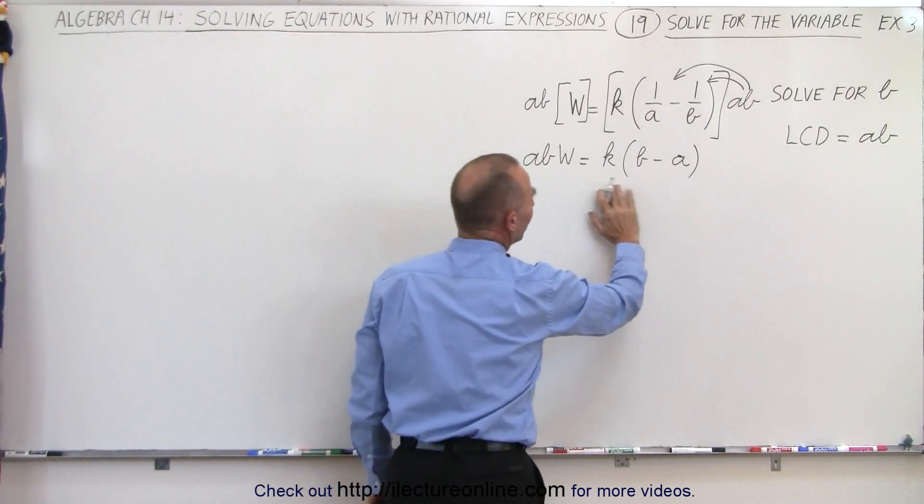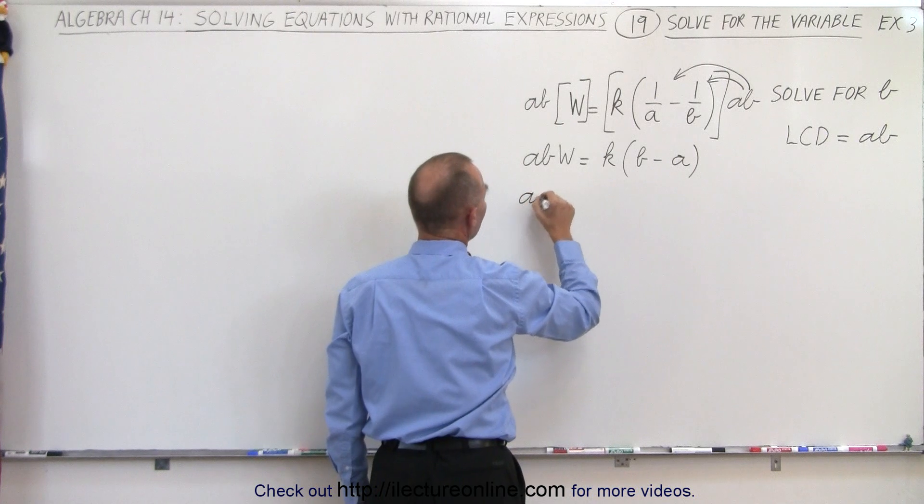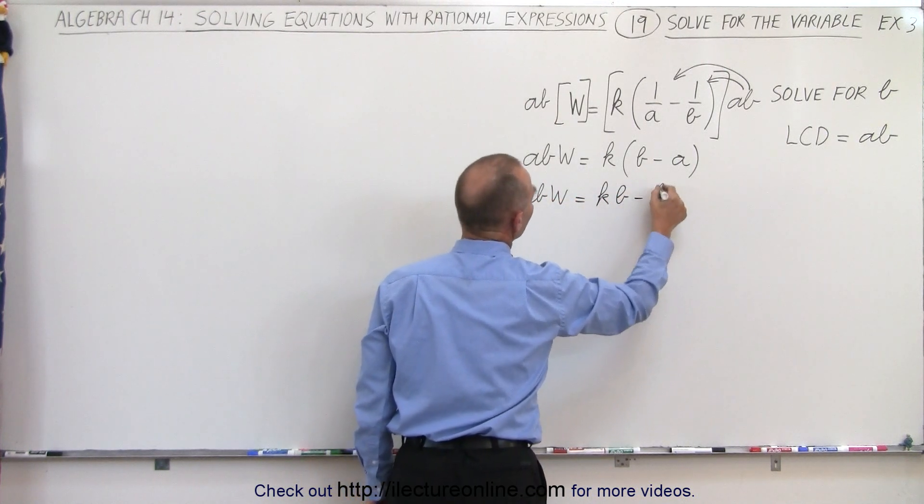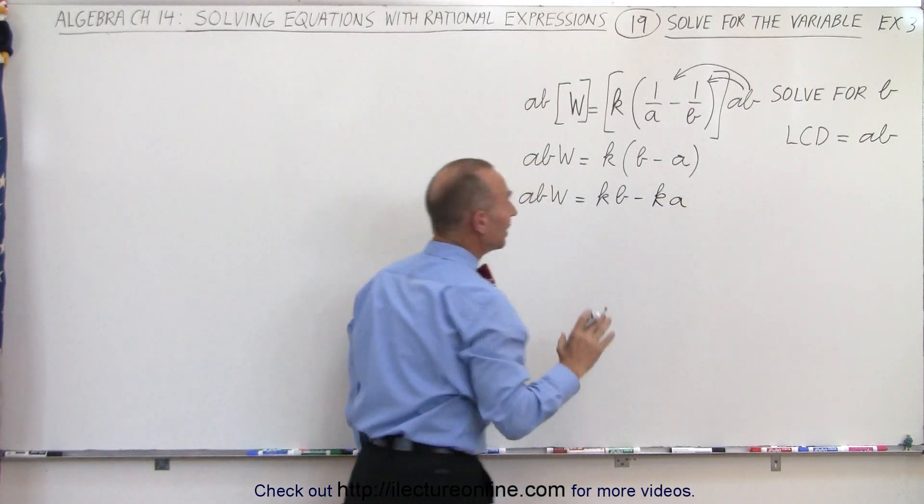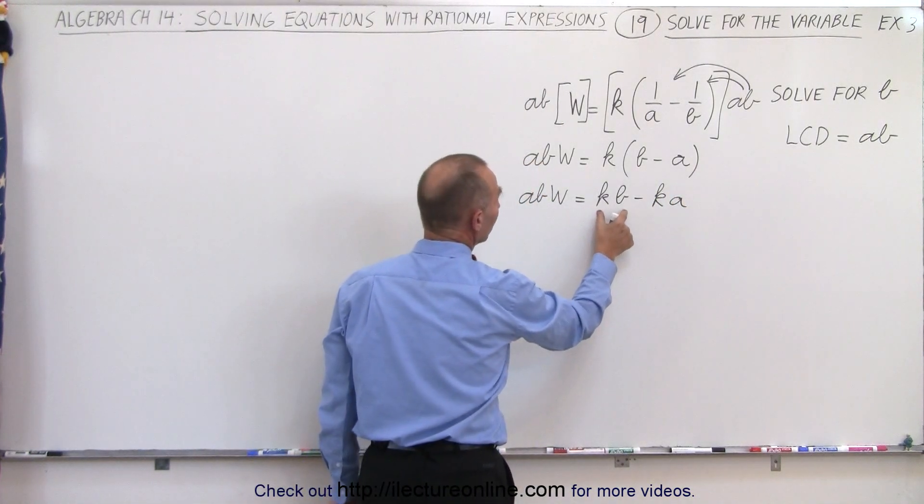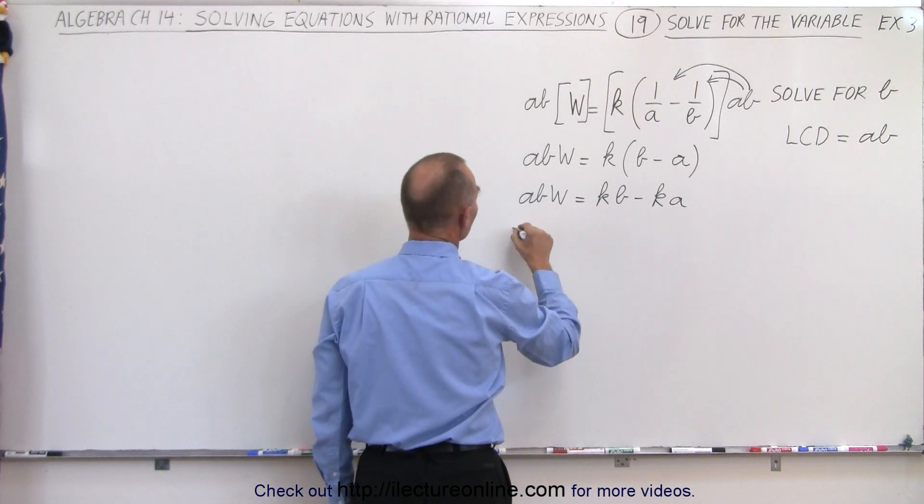Now let's get rid of parentheses by multiplying this through. So we have abw equals k times b minus k times a. And now since we're solving this for b, we need to move all the terms of the b to one side and leave everything else on the other side.